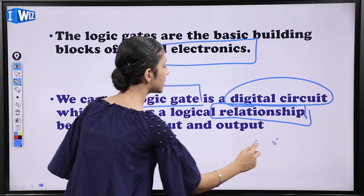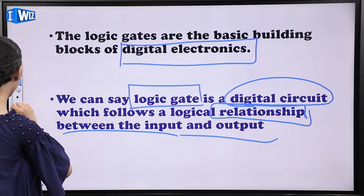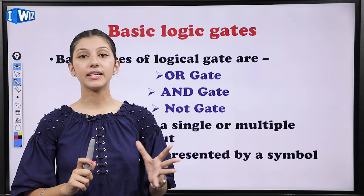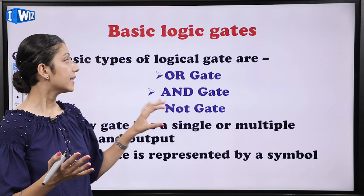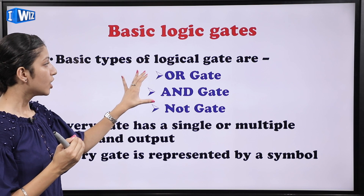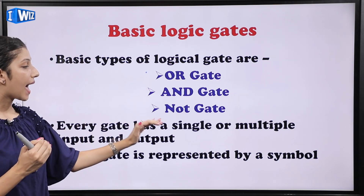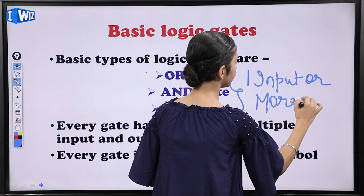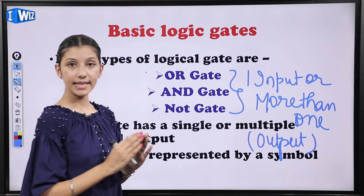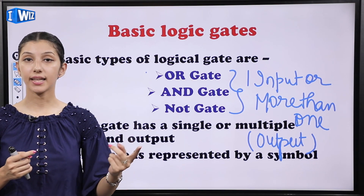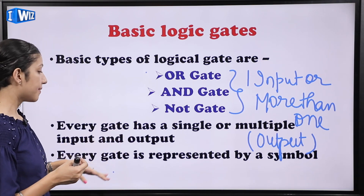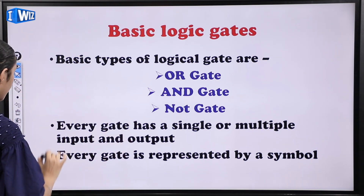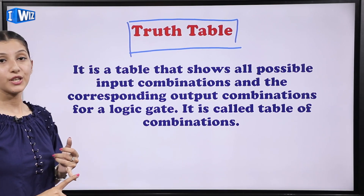Simply baat karein TV ke remote ki — usme itne chhote-chhote components lage hue hain — woh kya hain basically? Digital electronics components. Hum itne small area mein kitne saare components laga denge — integrated circuits. We can say that a logic gate is a digital circuit which follows a logical relationship between the input and output. Ab humare paas teen type ke basic logic gates hote hain — AND gate, OR gate, and NOT gate.